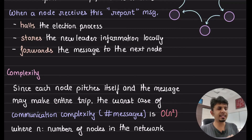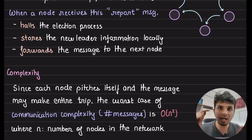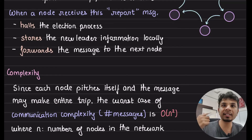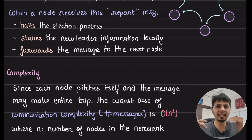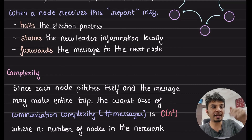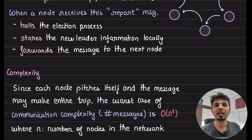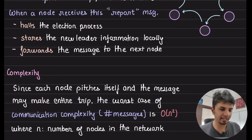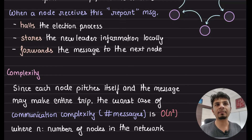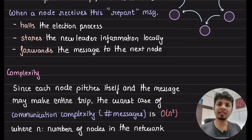That's it for the LCR algorithm — a very simple, intuitive leader election algorithm. You can see how people think when writing distributed algorithms: take baby steps at every point, take the bare minimum step you could think of, and you'll have a robust distributed systems algorithm at hand. If you liked this video, give it a thumbs up. If you like the channel, subscribe. I post three in-depth engineering videos every week and I'll see you in the next one.